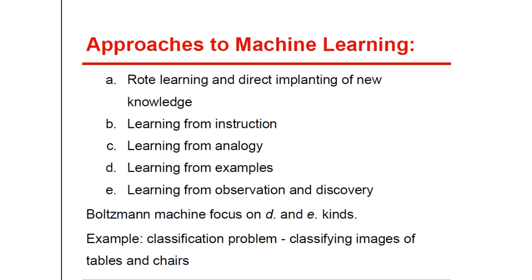We have an example of a classification problem where the machine has to classify images of tables and chairs. At the beginning, you give the machine inputs — for instance, an image of a table or chair — and make it learn to give the correct output, which would be the correct category of the furniture. But the machine can further learn to generalize. You can give it an output — the word 'chair' or 'table' — and make it generate the input correctly. So the machine can generate for a given input the most probable output, and for a given output the most probable input. In this case, learning in the Boltzmann machine is analogous to learning from examples. This type of algorithm is also called the maximum likelihood method.